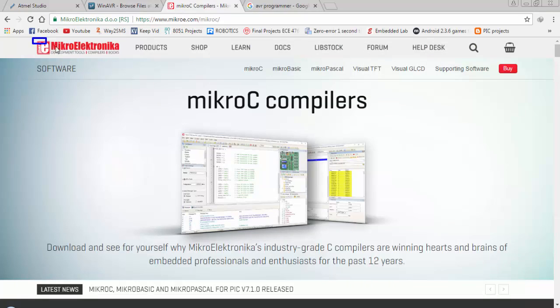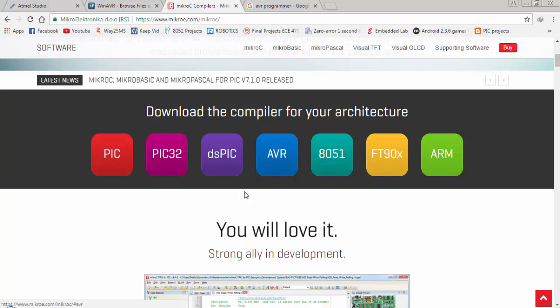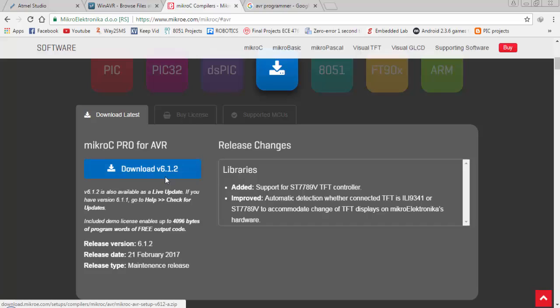The third option is the compiler from Micro Electronica which is MicroC Pro for AVR. You can download the compiler by selecting this AVR option. And this is the latest version available on the website. You can use the demo version of this MicroC compiler for a few programs, or you can download the universal patch for this compiler.